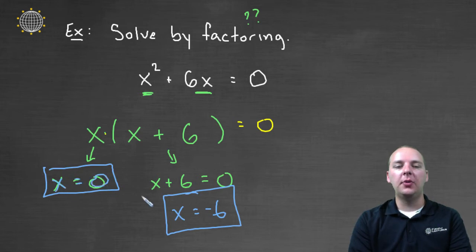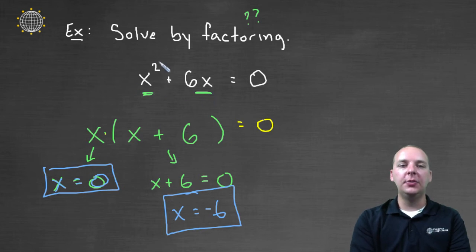x = 0 and x = -6 would be your two solutions to the quadratic equation. You can test these—you can take them and plug them in. 0² + 6(0) does in fact equal 0.